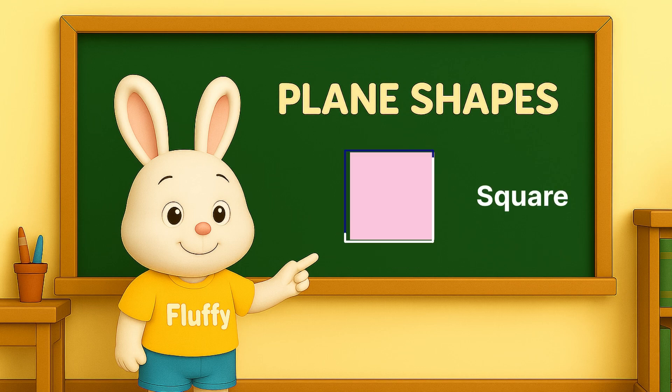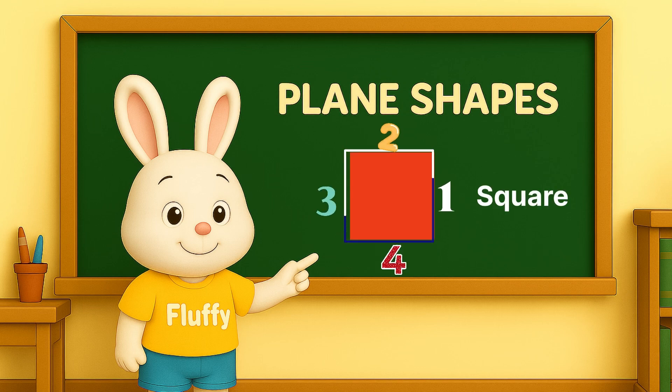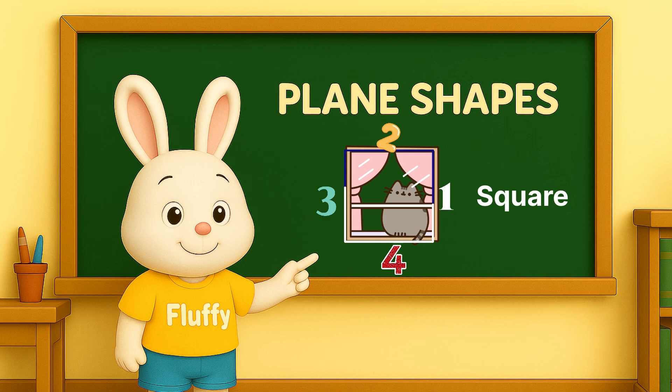Square. A square has four equal sides. All the sides are the same length, like a window.